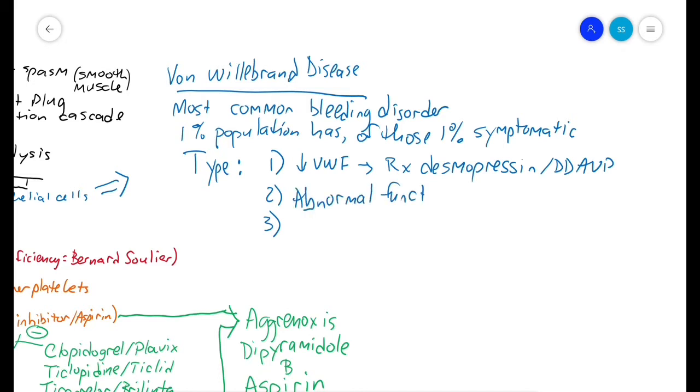Type 2 von Willebrand disease is abnormal function of von Willebrand factor, although they have normal levels. This is generally treated with DDAVP. Type 3 is the most serious type where you do not have von Willebrand factor. That cannot be treated with DDAVP - you have to use cryoprecipitate.